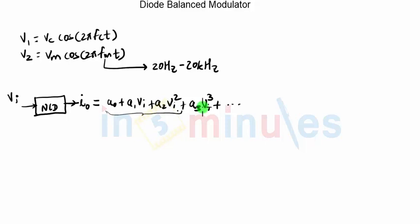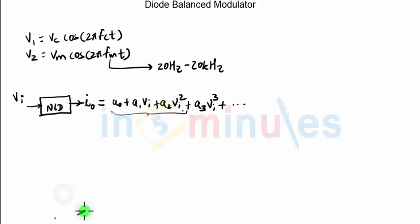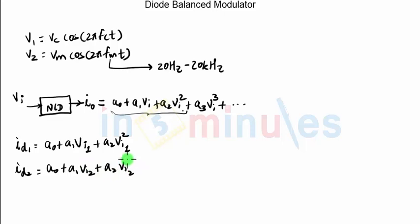Now let us see how are we going to use this concept in the discussion of balance modulator. Balance modulator has two diodes so let me write down the expression of both the diode current, let's say ID1. ID1 will be A0 plus A1 times VI1 plus A2 into VI1 squared. I will neglect all the higher order terms of the output signal. Let us now write down the similar expression for the second diode current ID2 which will be A0 plus A1 VI2 plus A2 VI2 squared.